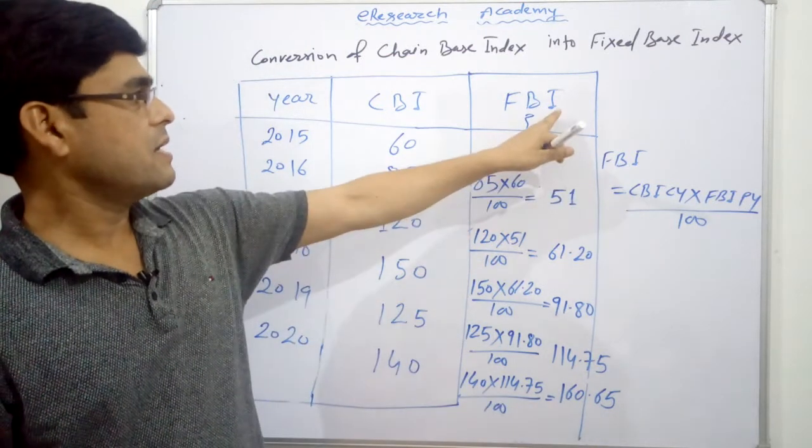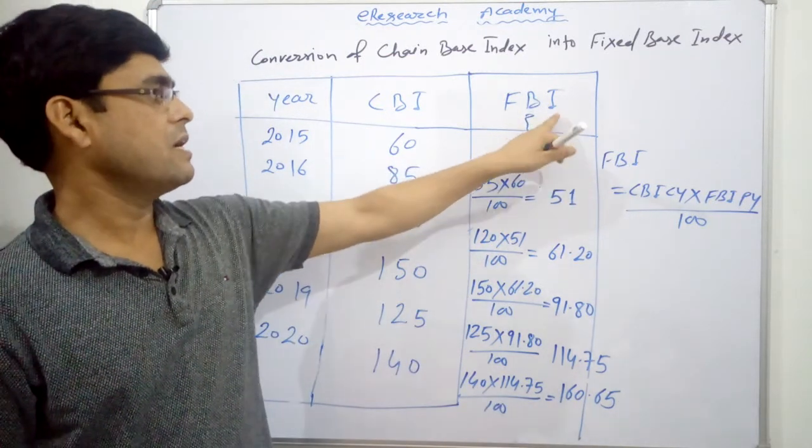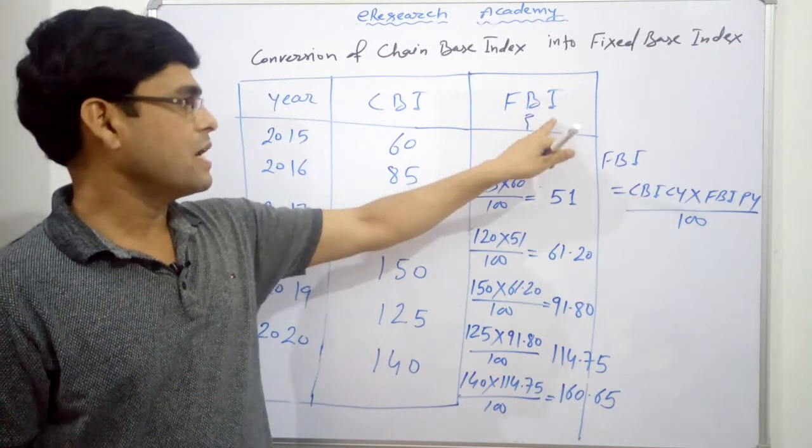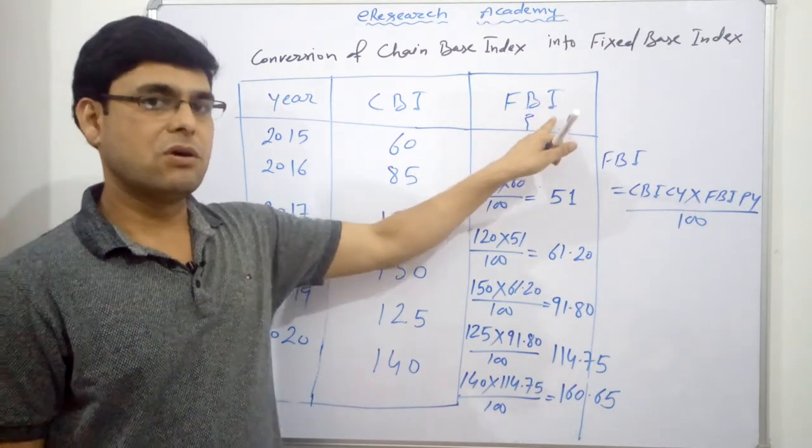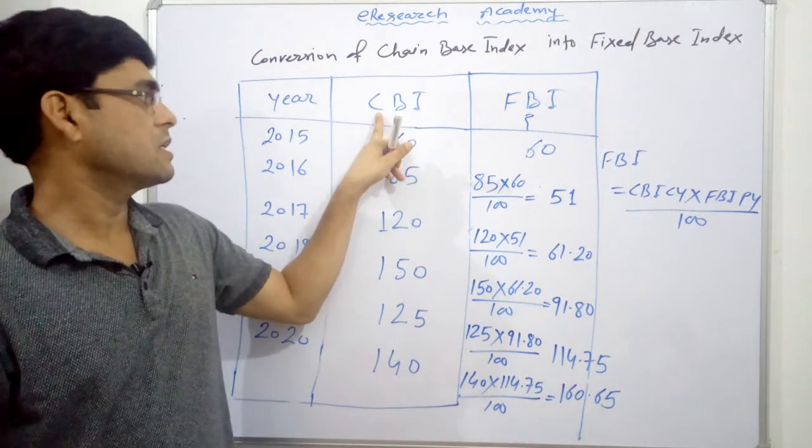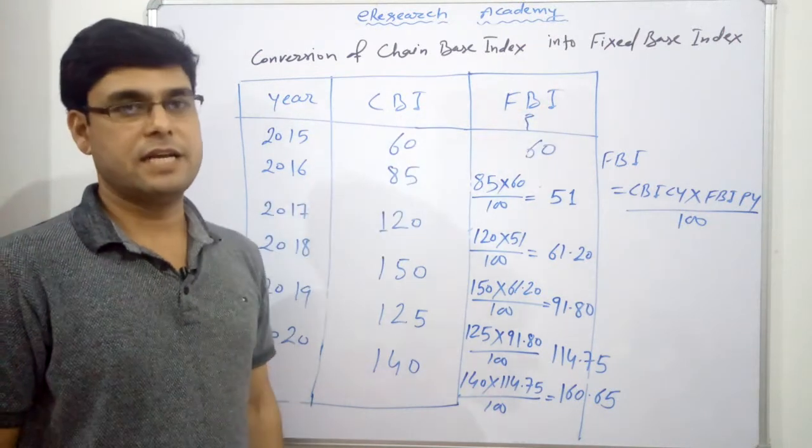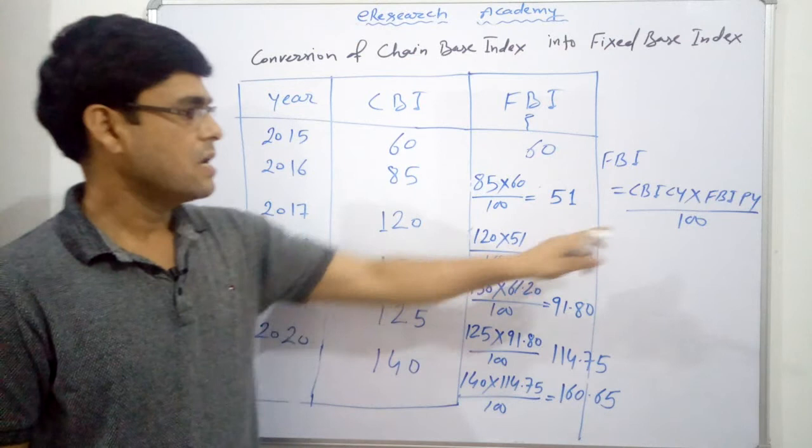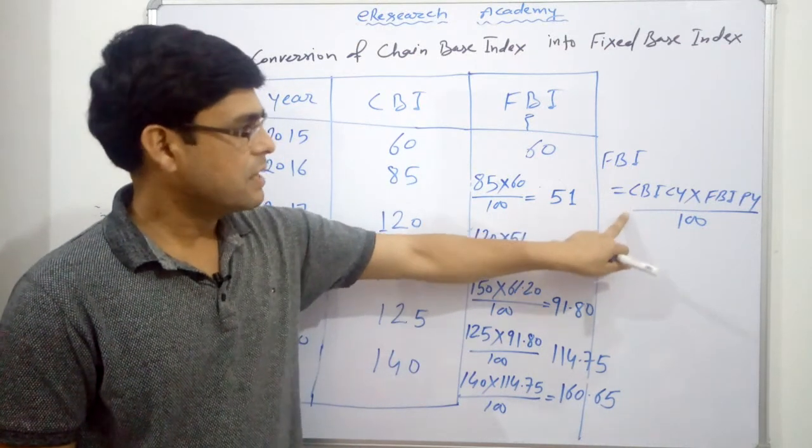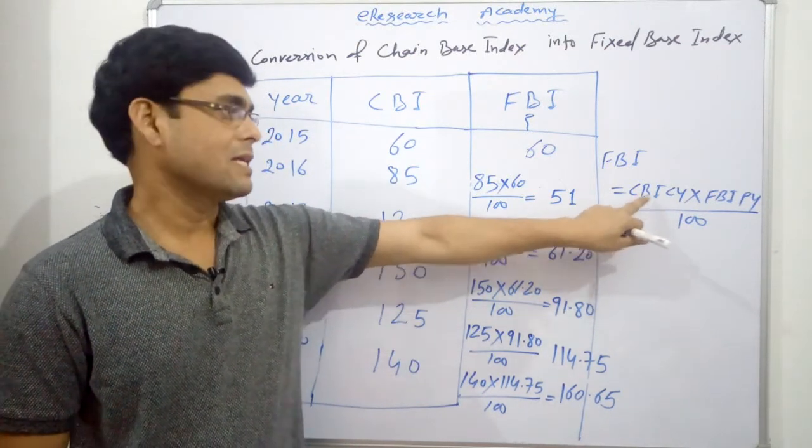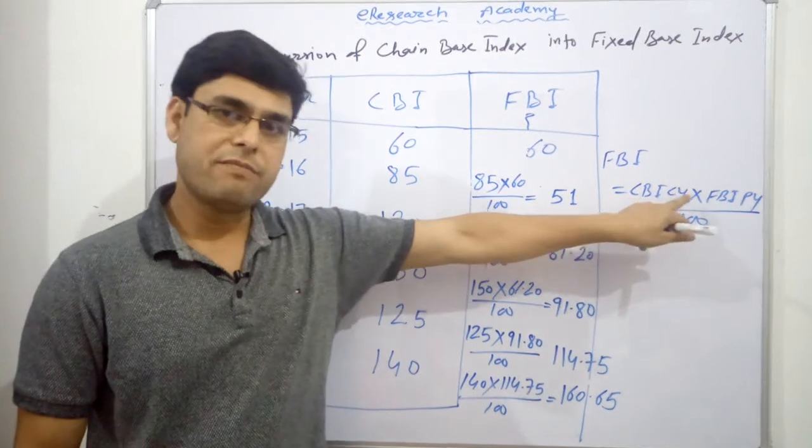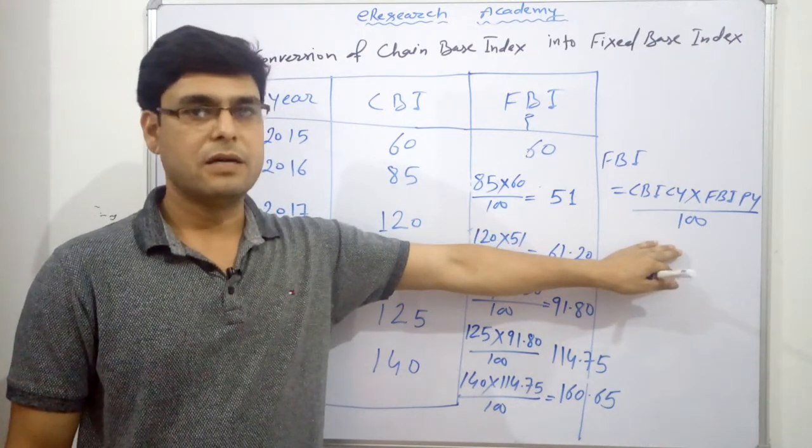So friend, by this way, we construct our FBI or calculate our fixed base index or convert these chain base index into the fixed base index. This is quite easy. What we have to do, we have to remember this formula only. CBI of current year into FBI of previous year by 100.